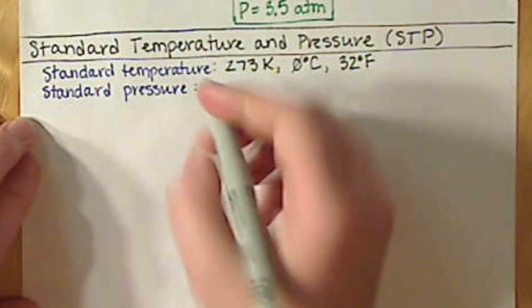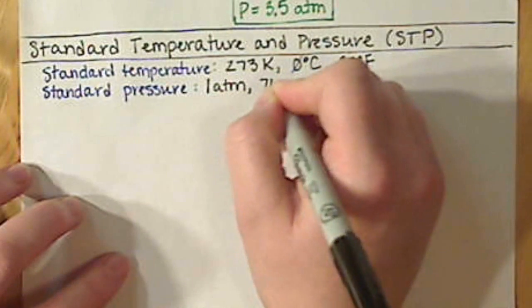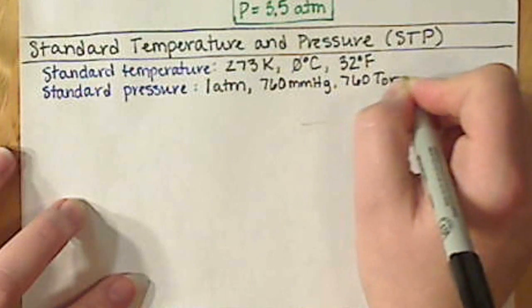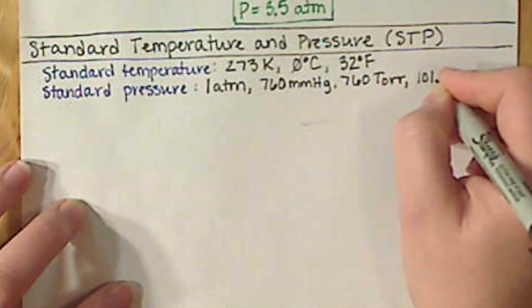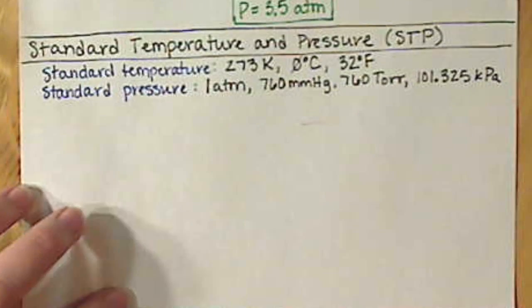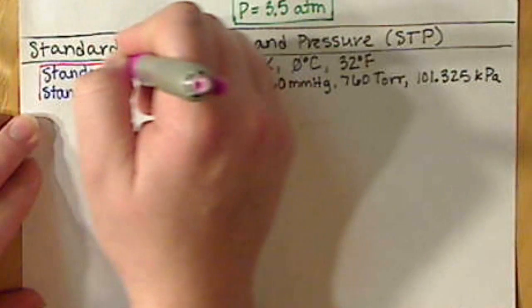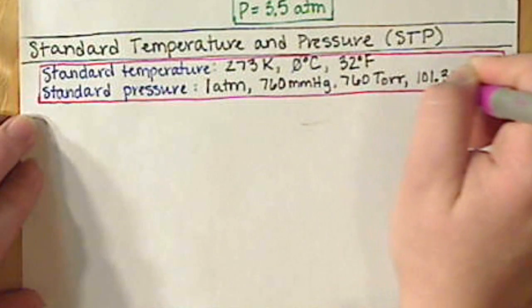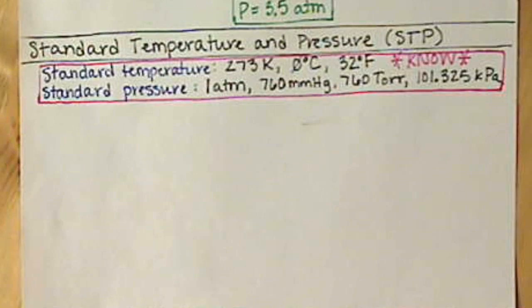Our standard pressure is going to be one atmosphere. Some other units that you might see: you might see it in millimeters of mercury, so 760 millimeters of mercury or torr. On a rare occasion, kilopascals is kind of common in chemistry, so you might see that 101.325 kilopascals. Typically I would say we stick kind of to atmospheres, millimeters of mercury, and torr. These are numbers, values, units that you're going to want to know. Those would not be given on a test.